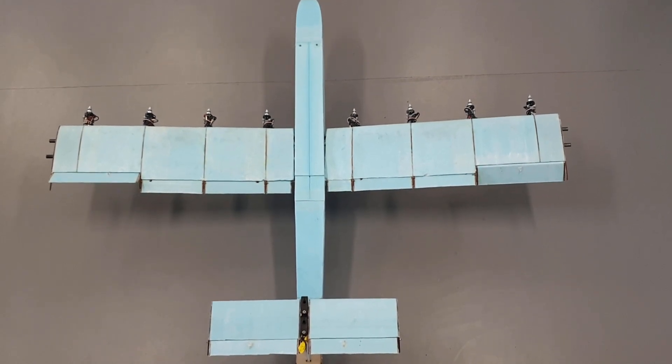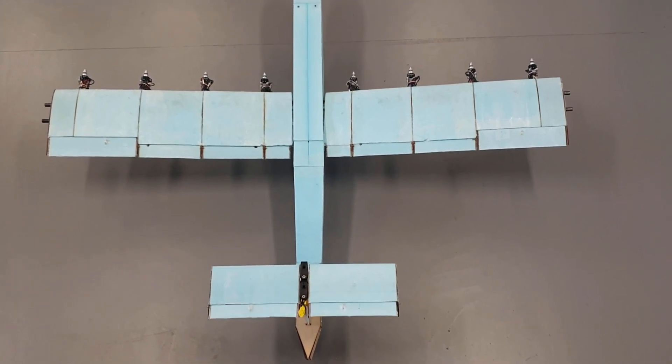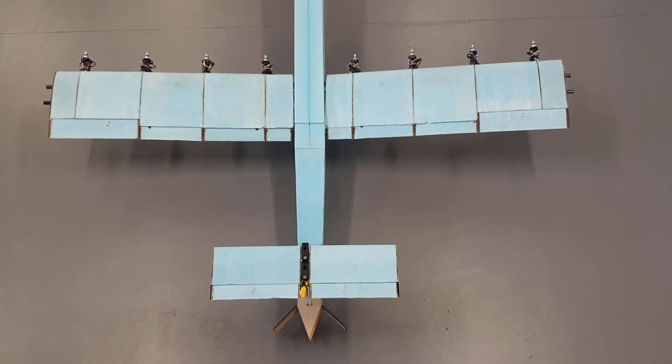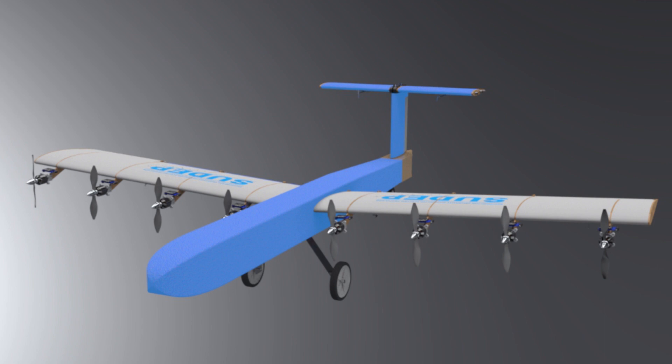Foam wing sections are bonded to carbon fiber spars and plywood ribs, wrapped in fiberglass, reducing both wing bending and twist. The aircraft is designed for a static margin of 0.15 with the center of gravity placed at approximately quarter-chord.